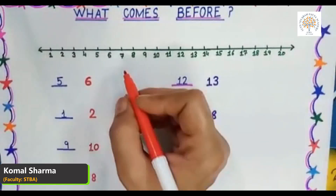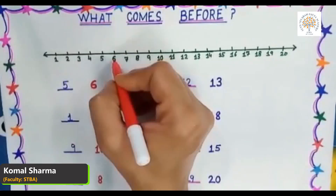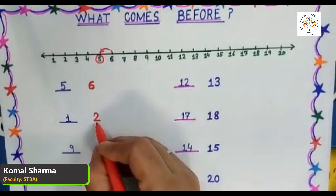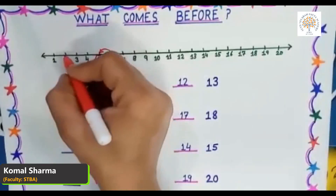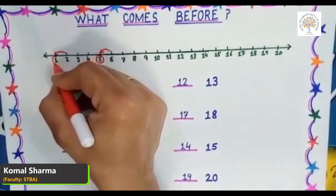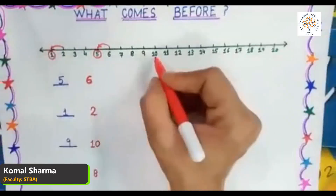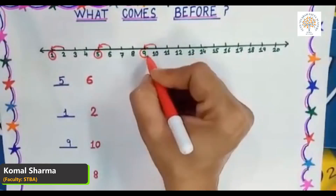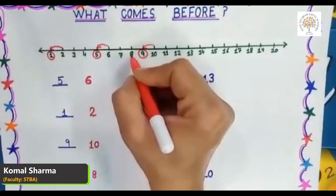Let's repeat. Which number comes before number six? Look at the number line — here is number six, and number five comes before it. Which number comes before number two? Here is number two, and number one comes before it. Now, what comes before number ten? Here is number ten on the number line — number nine comes before it. And what comes before number eight? Here is number eight — number seven comes before it.